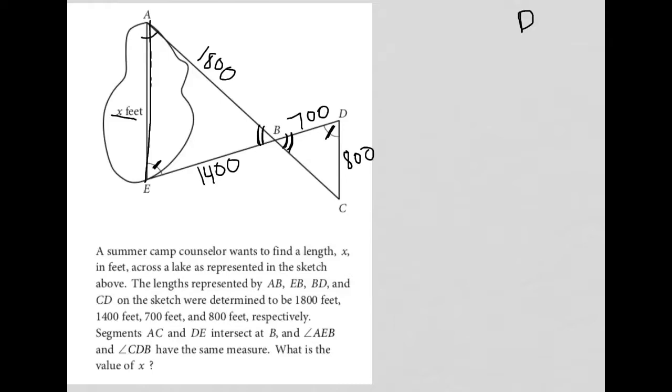that forces the remaining angle, so angle A and angle C, to also be the same. Anytime you have three angles between multiple triangles that are exactly the same, you are more than likely dealing with a similar triangles question, which means that the sides are proportional.